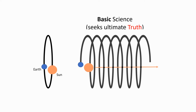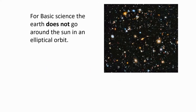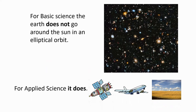This is the level of investigation that basic science seeks — it wants to know how things really are at their very deepest level. Applied science is different: it seeks to support certain actions. There are all kinds of actions that are very well satisfied by assuming that the Earth goes around the Sun in a simple elliptical orbit. So for basic science, the Earth does not go around the Sun in an elliptical orbit; however, for the purposes of applied science, it does.